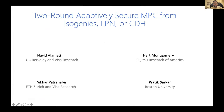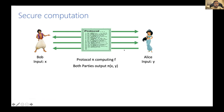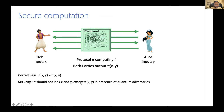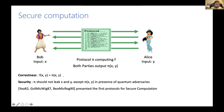Hi everyone. My name is Pratik, and today we are going to talk about two-round adaptively secure MPC from isogenies, LPN, or CDH. This is joint work with Navid, Hart, and Sikar. We consider secure computation in the two-party setting. There's a party Bob and a party Alice with private inputs X and Y. They want to compute a function F on their private inputs. The protocol should satisfy two properties: correctness — the function output should be same as the protocol output — and security — the protocol should not leak anything about the private inputs. The first protocols for two-party computation were presented by Yao, Goldreich-Micali, and Beaver-Micali. Two-party computation has applications in privacy-preserving machine learning and blockchains.